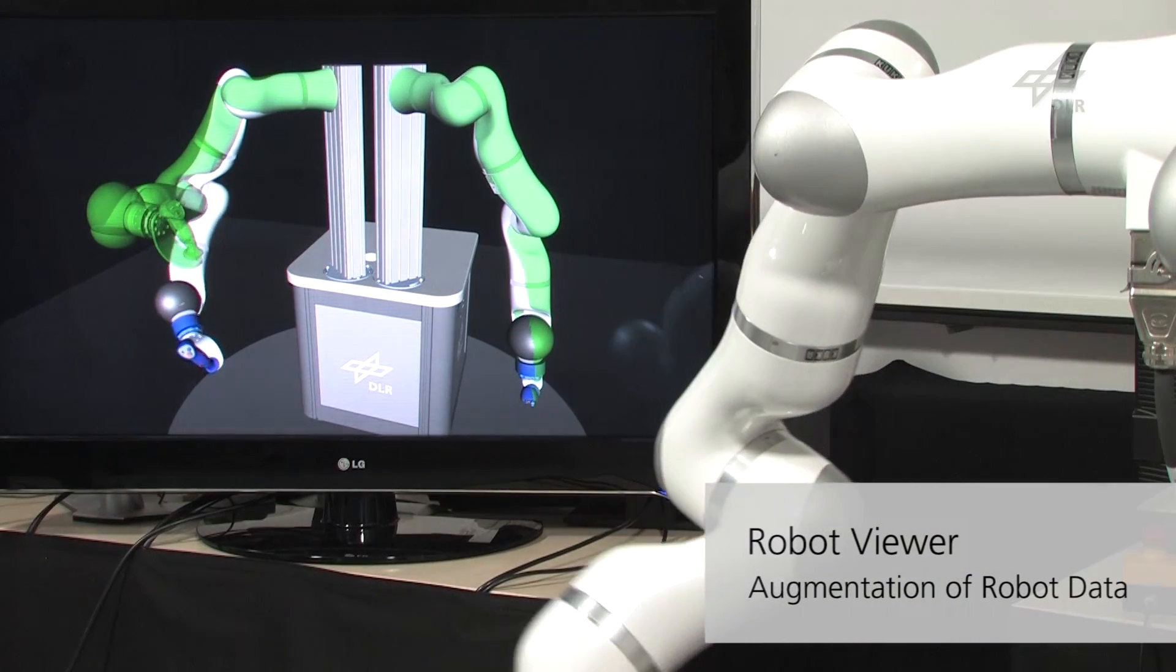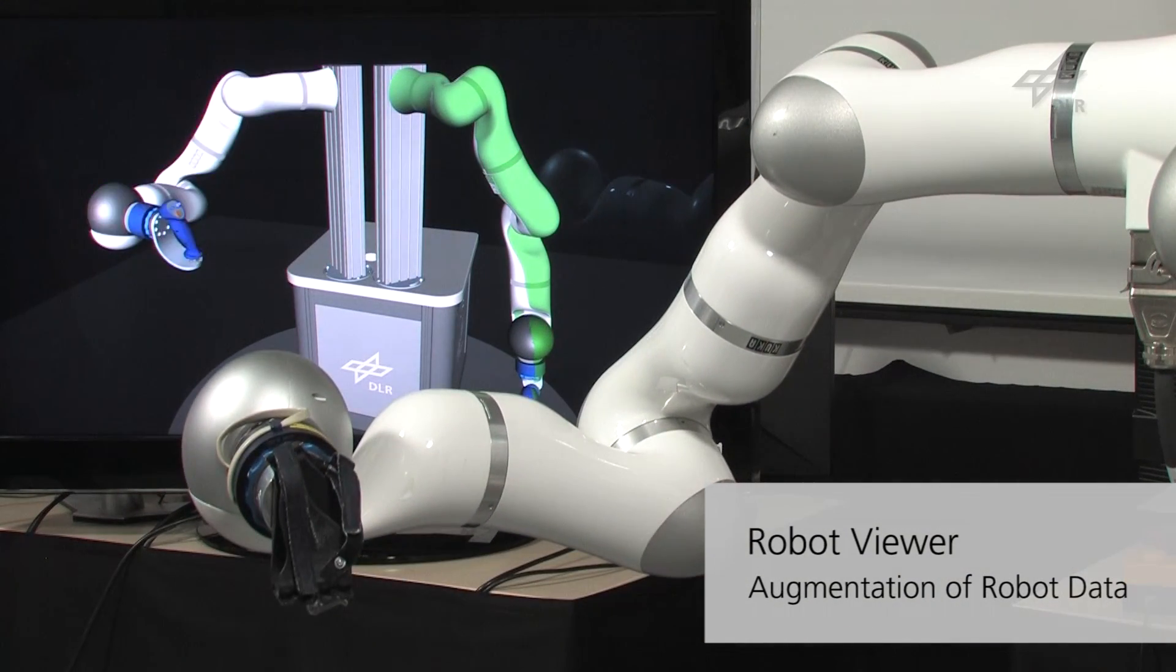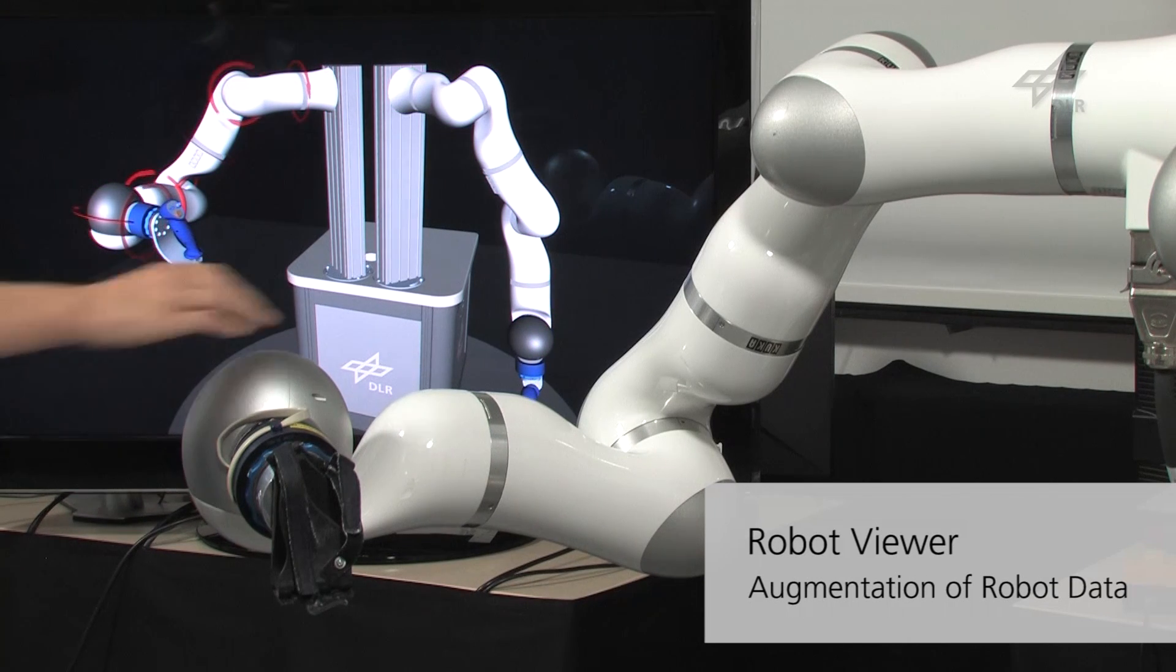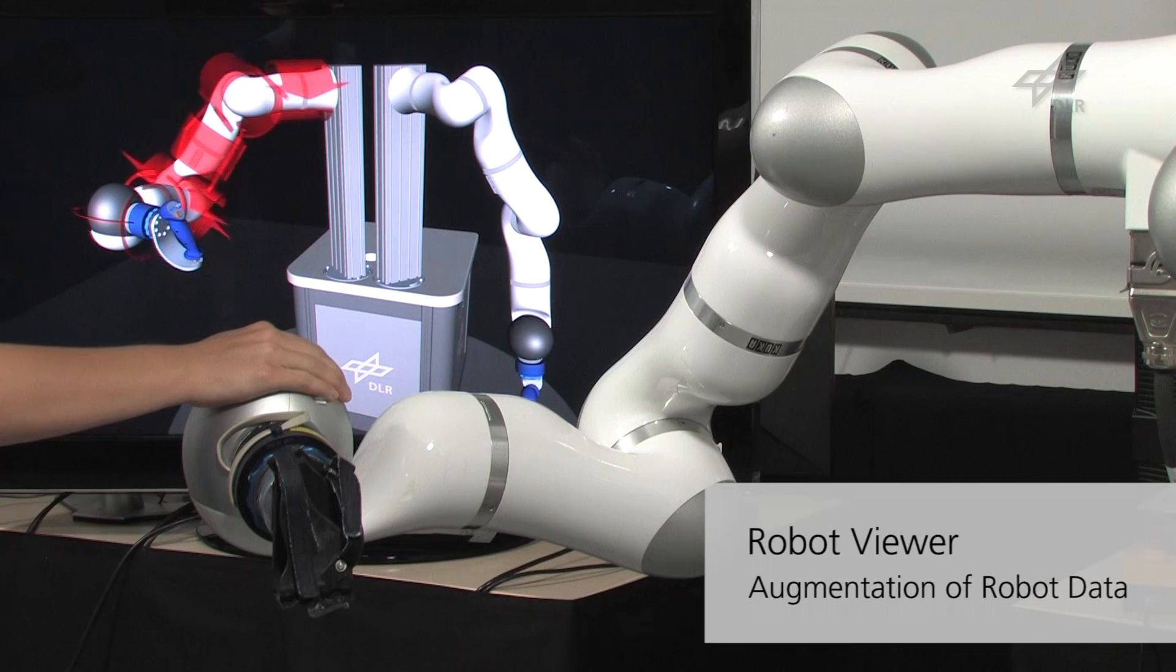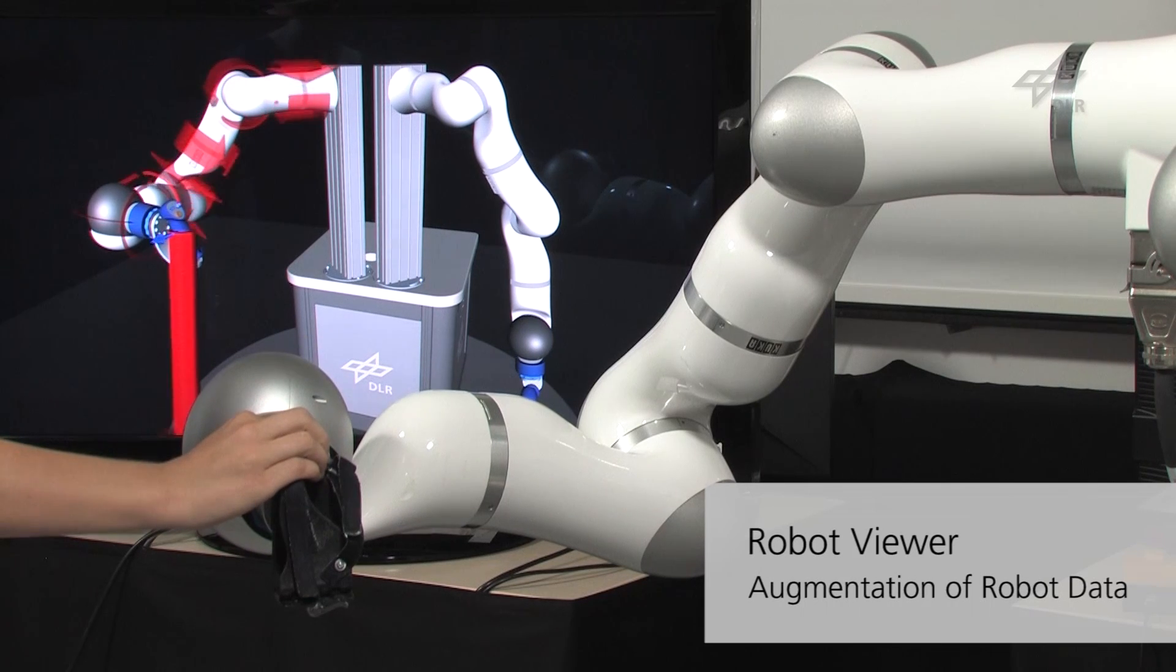Our robot viewer augments intuitively the bimanual interfaces with user information such as the robot's target configurations and forces and torques applied on the structure and on the hand interfaces.